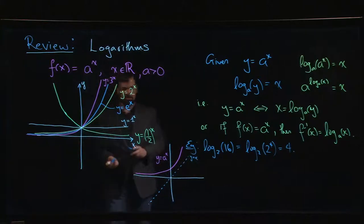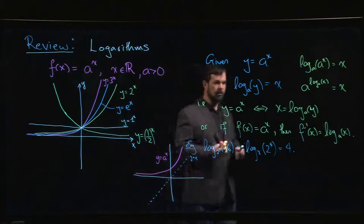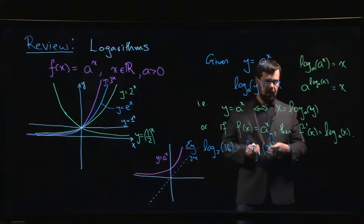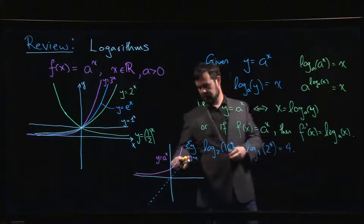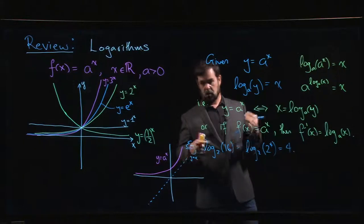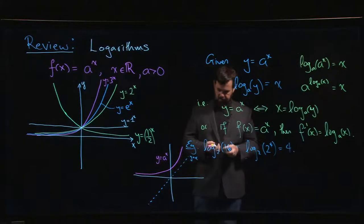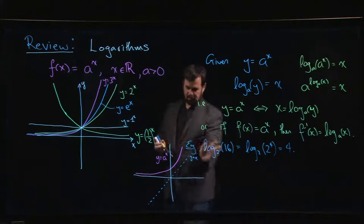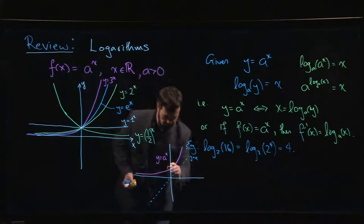Here's the line y equals x which you reflect across. Remember the basic idea with inverses is you're interchanging the role of x and y. So if (x,y) is a point on the graph of y equals a to the x, then (y,x) is a point on the graph of the logarithm, and so everything kind of reflects across.